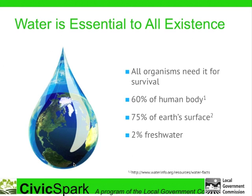The first and most important thing you need to know about water is that we can't live without it. Every organism on the planet needs water in some form for its survival, including humans. You've probably heard similar statistics before: the human body is made up of about 60% water, and you can only survive about three days without water. 75% of the Earth's surface is covered in water. However, only a tiny fraction of that — 2% — is fresh water available to us for drinking, washing, irrigation, etc.